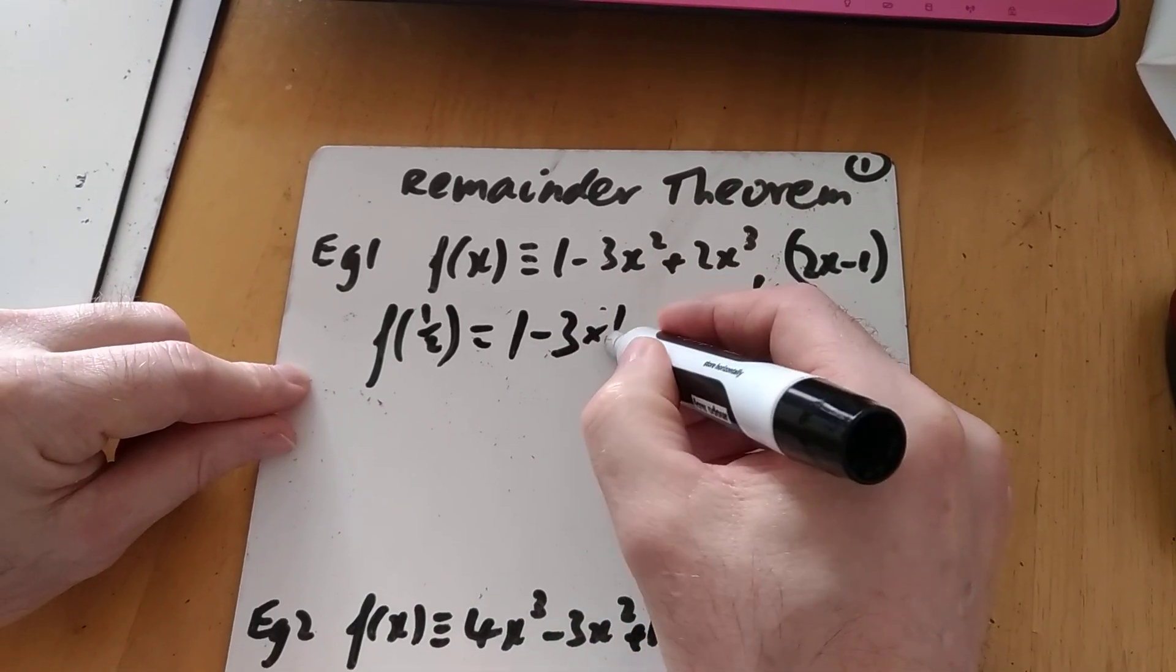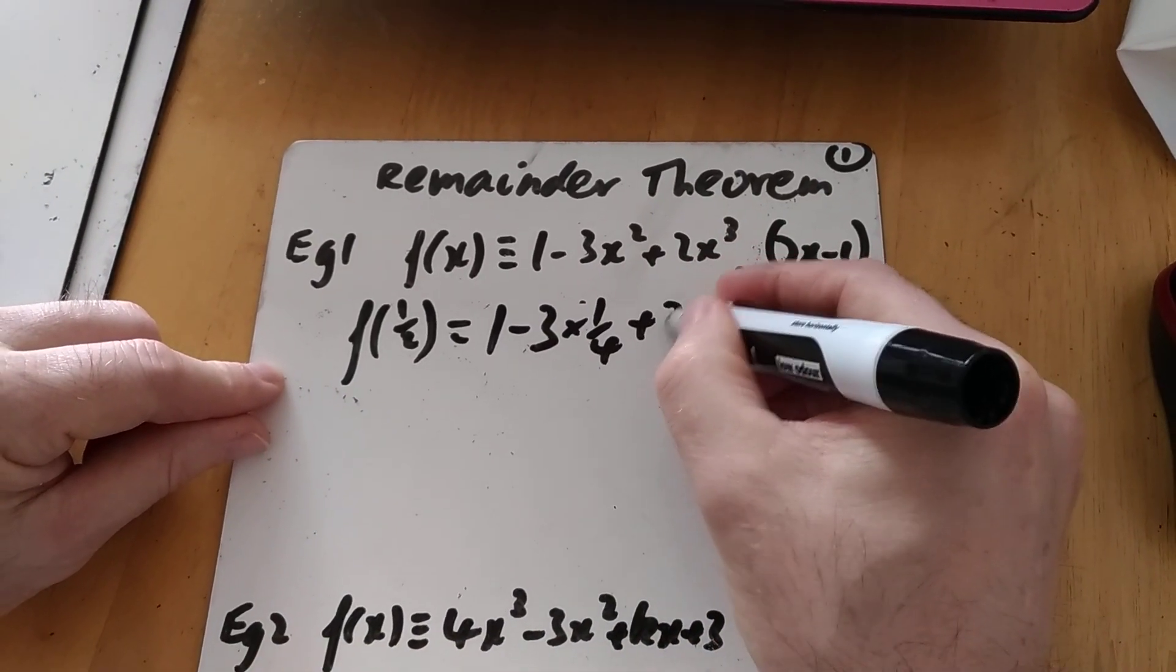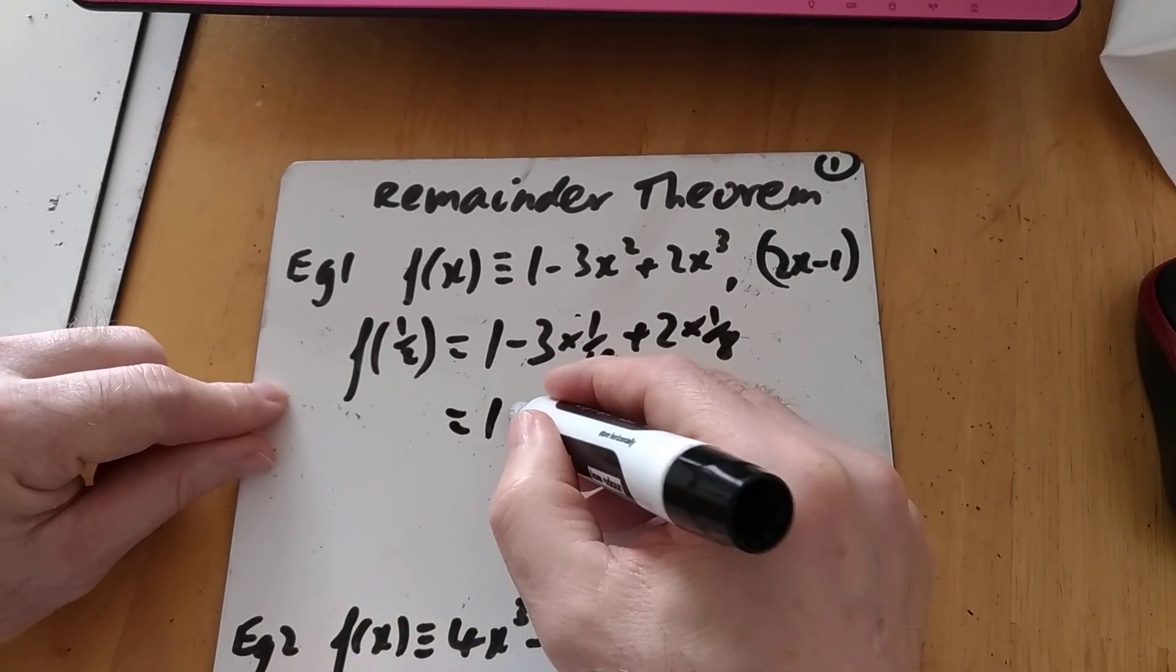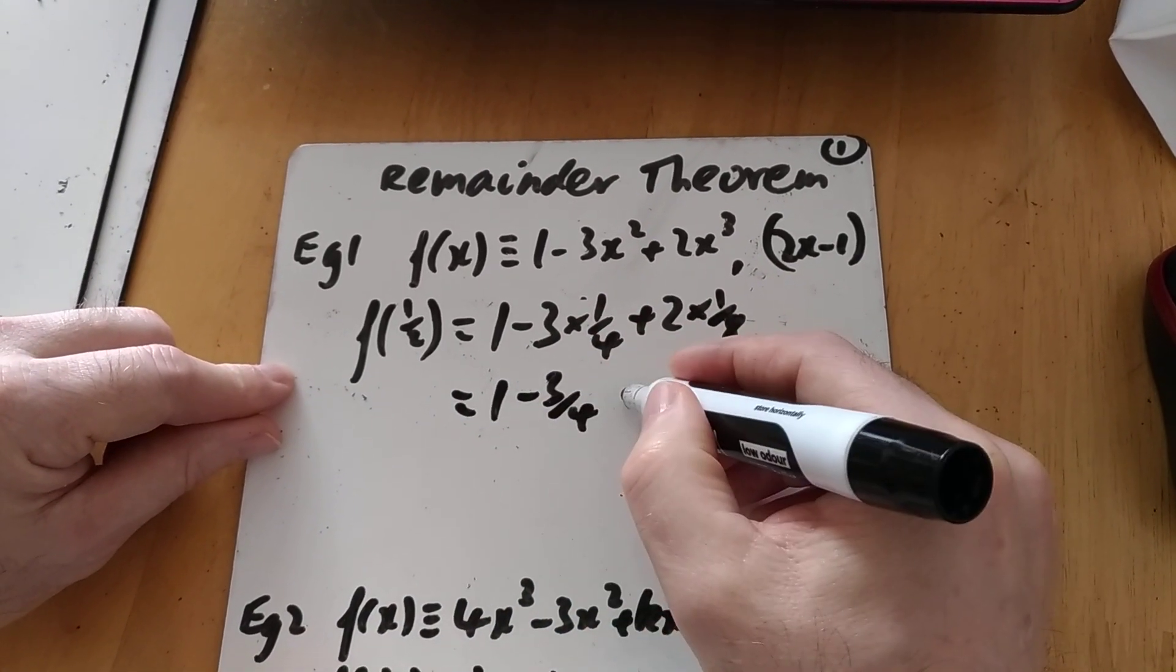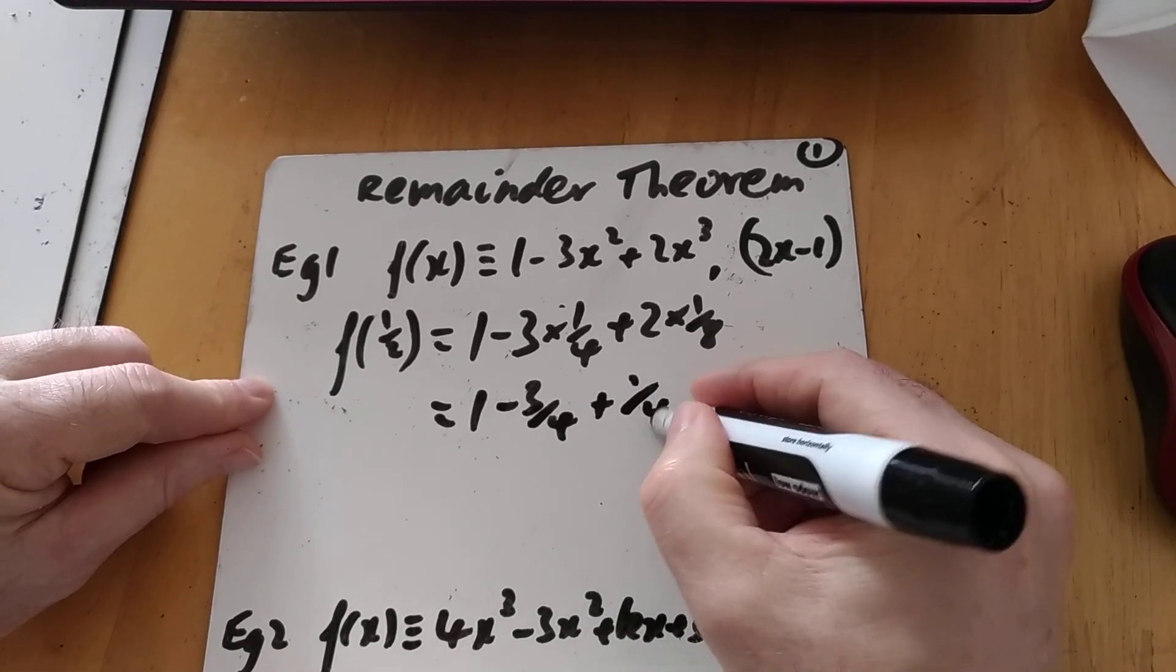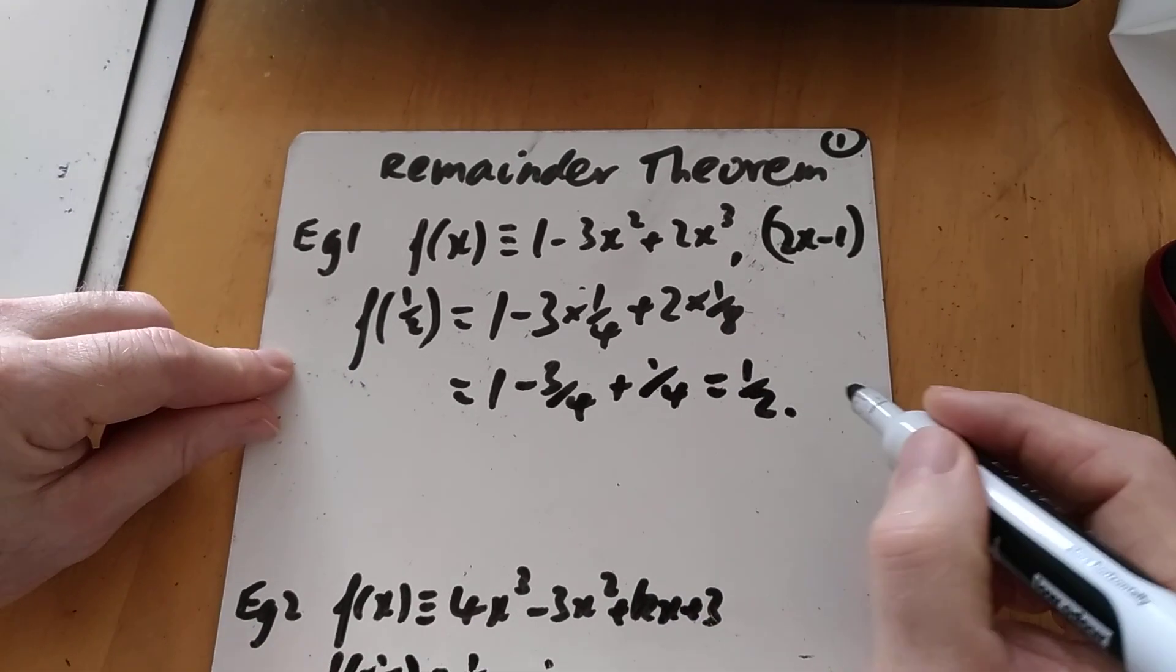So when I stick a half in, I get 1 minus 3 times a quarter, plus 2 times an eighth, which is 1 minus 3 quarters, which is a quarter, plus 2 eighths, which is another quarter, equals a half. Simple as that.